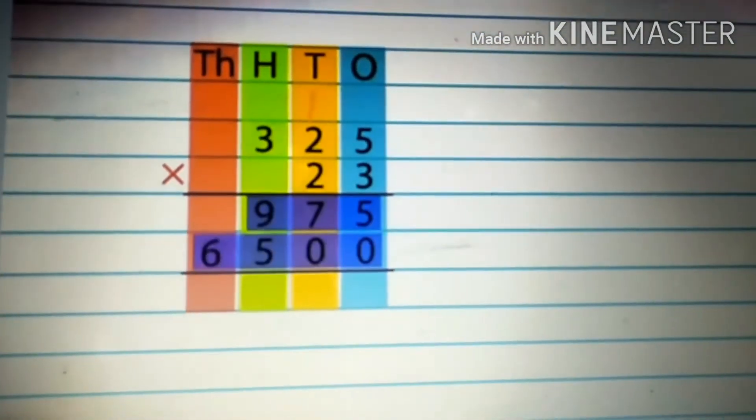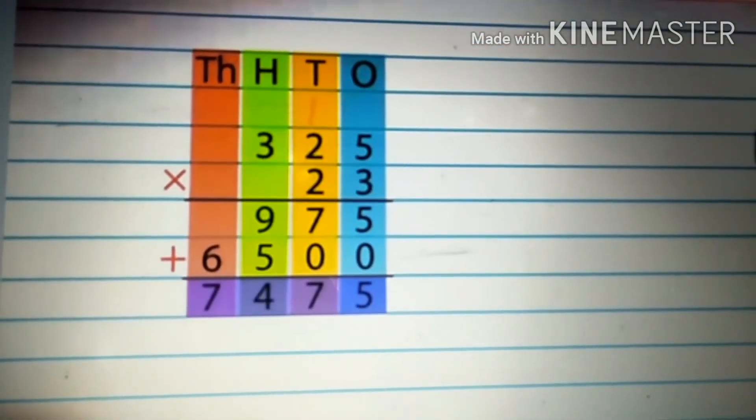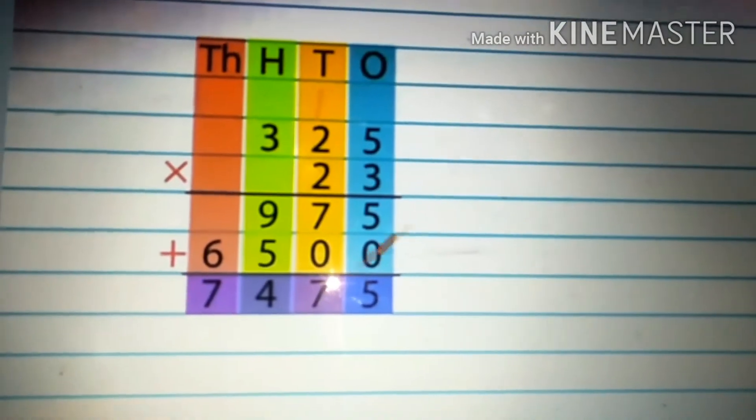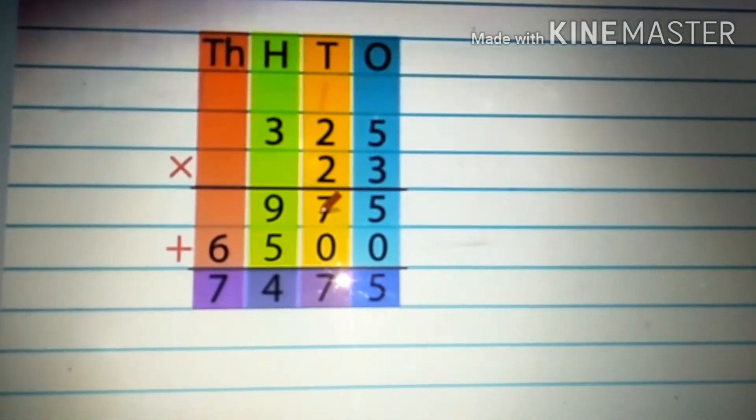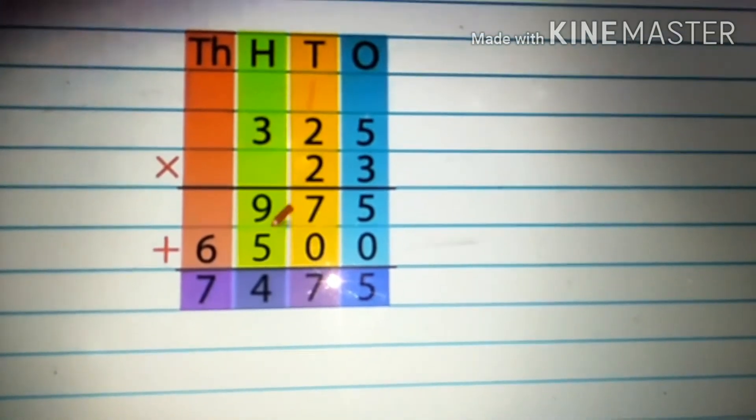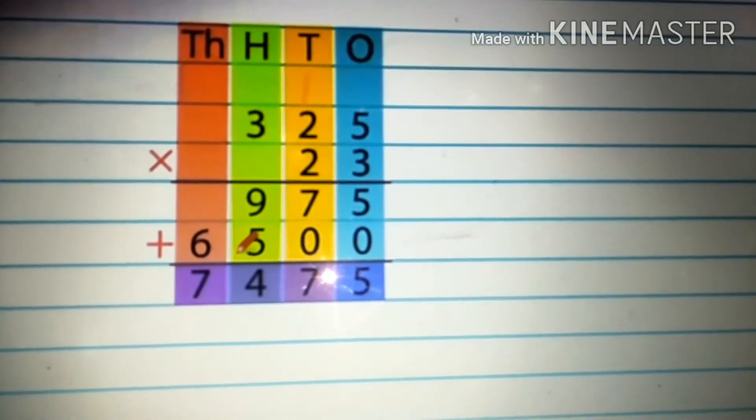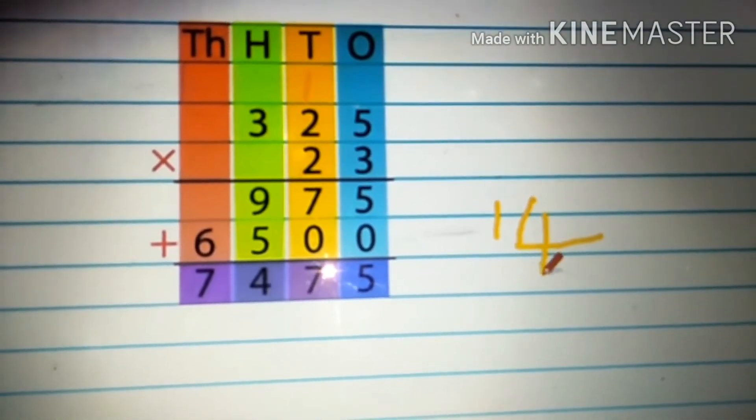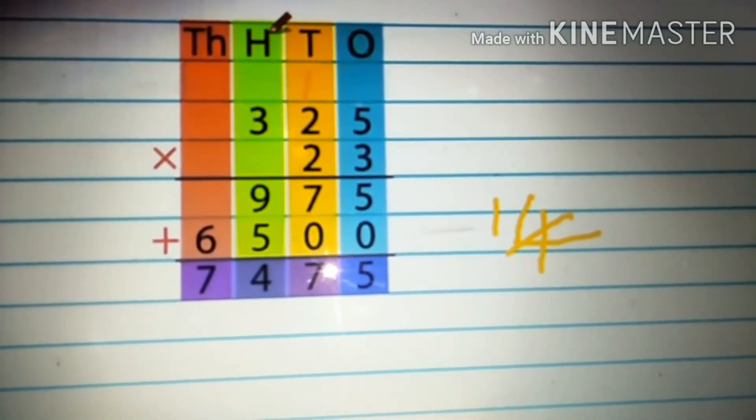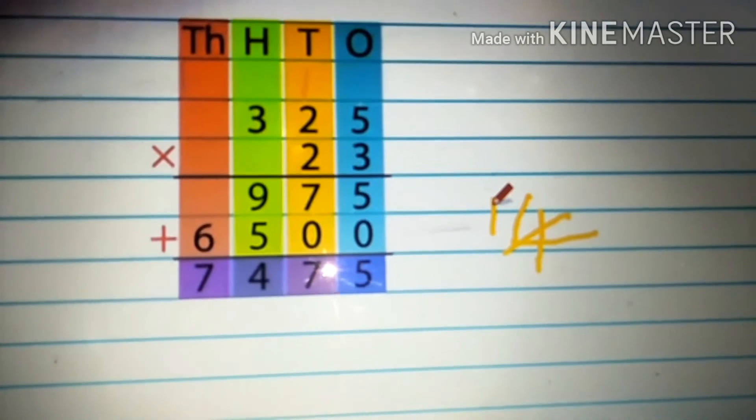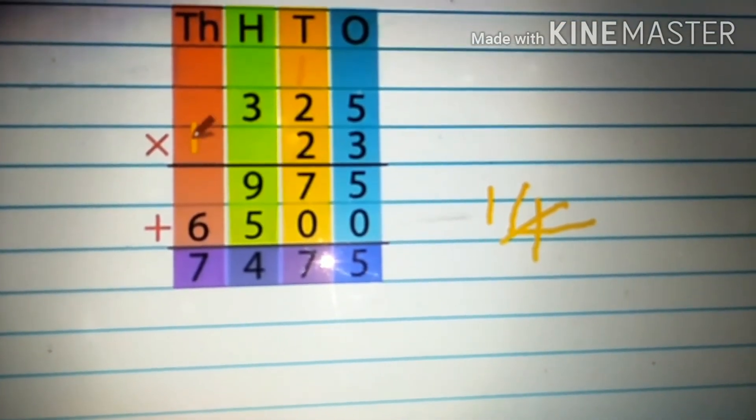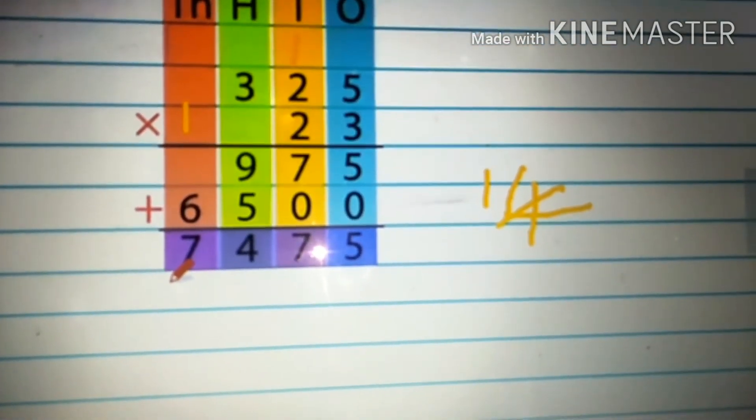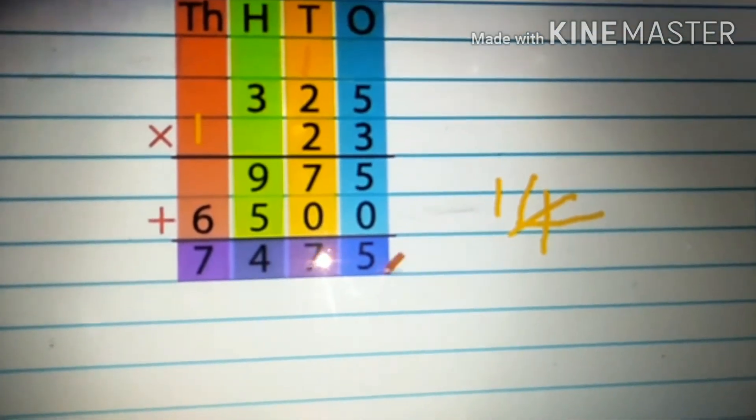Finally, we add the two numbers together for the answer. So zero plus five equals five. Seven plus zero equals seven. Nine plus five equals fourteen. So we write four under the hundreds place and carry over one to the thousands place. So one plus six equals seven. So our answer is seven thousand four hundred and seventy-five.